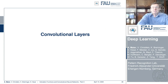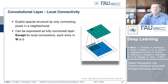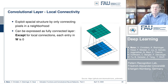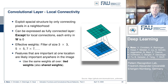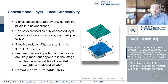Let's start with the convolutional layers. The idea is to exploit the spatial structure by only connecting pixels in a neighborhood. In a fully connected layer, we could set every entry in our matrix to zero except for local connections, neglecting connections over spatial distances. We use filters of size 3x3, 5x5, or 7x7, and the weights are identical over the entire layer — the same even when you shift them around. This is called tied or shared weights, and doing this means you are essentially modeling a convolution with trainable filter masks.